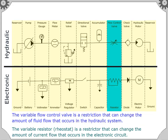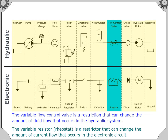The variable flow control valve is a restriction that can change the amount of fluid flow that occurs in the hydraulic system. The variable resistor or rheostat is a restrictor that can change the amount of current flow that occurs in the electronic circuit.